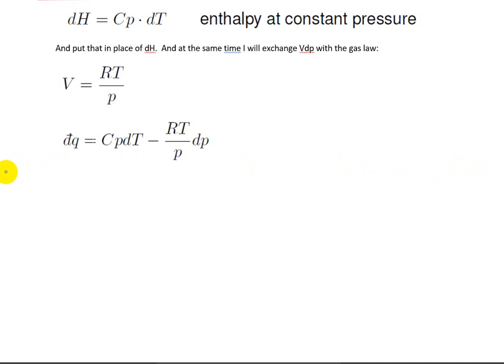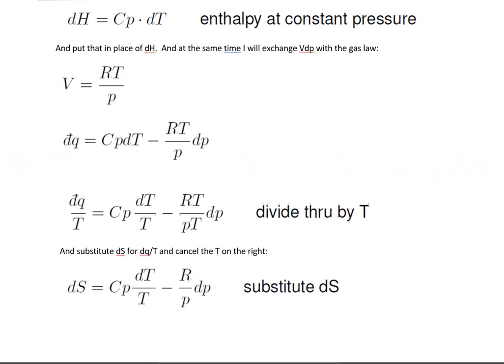All right, the next thing I want to do is divide through by temperature. When I divide dq by temperature, I'm going to get dS. I'm going to get the change in entropy. When I divide Cp dT by temperature, we'll get Cp dT over T. And this other term on the right, we'll get RT over pT. And of course, those two T's cancel. And so with a substitution of dS for dq dT, we wind up with dS is equal to Cp dT over temperature minus the gas constant over pressure times the change in pressure.